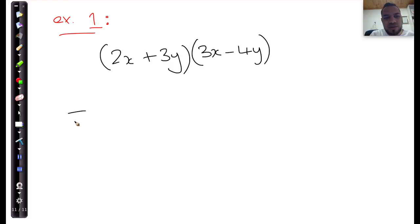And then we say this is equal to, take this entire first term, 2x, and then write out the factor that's next to it. 3x minus 4y plus the second term, 3y multiplied by 3x minus 4y.